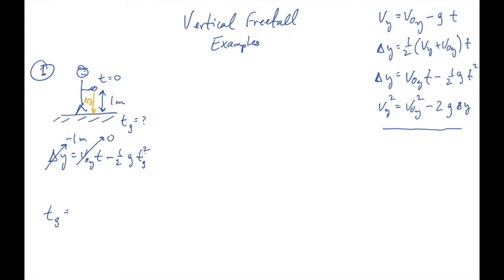There's a square here, so after you do the algebra, you get minus two delta y over g. And when you substitute the numbers, you find minus two times negative one, so those two negative signs cancel, divided by g and take the square root. What I get is 0.452 seconds.